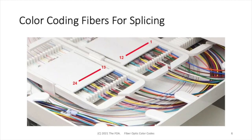Here we can take a closer look, and you can see at the top fibers 1 through 12, starting with blue and ending in aqua, and 13 through 24, again starting in blue and ending in aqua, for this 24 fibers spliced in the splice tray. The fibers on the left, the 250 micron buffered fibers, are lined in the same color codes as the 900 microns on the right. So we're splicing color for color, which is typical of the way you line up splices in a splice tray.